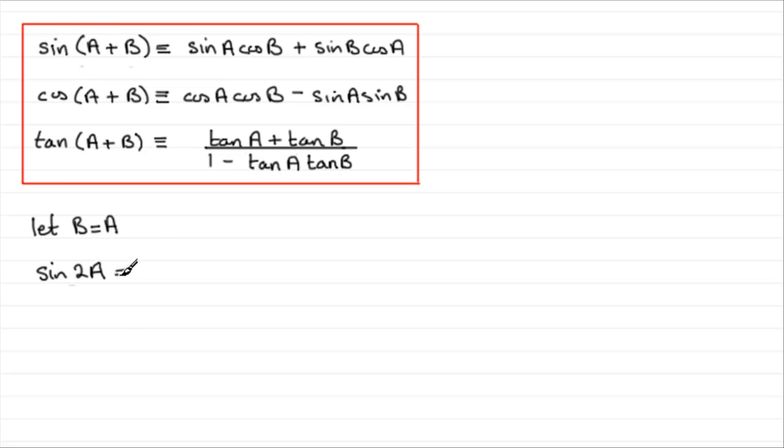And so that's going to be identical to sine A, and this B is replaced with an A, so we get sine A cos A. And then for this term here, where this B is, it's replaced with an A. So we get sine A cos A again, plus sine A cos A.